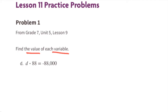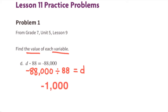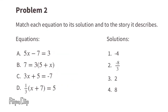Negative 88,000 divided by positive 88 equals d. Since negative 88,000 divided by 88 equals negative 1,000, then d equals negative 1,000. Let's double-check: negative 1,000 times 88 equals negative 88,000, so d equals negative 1,000. Problem number two: match each equation to its solution and to the story it describes.